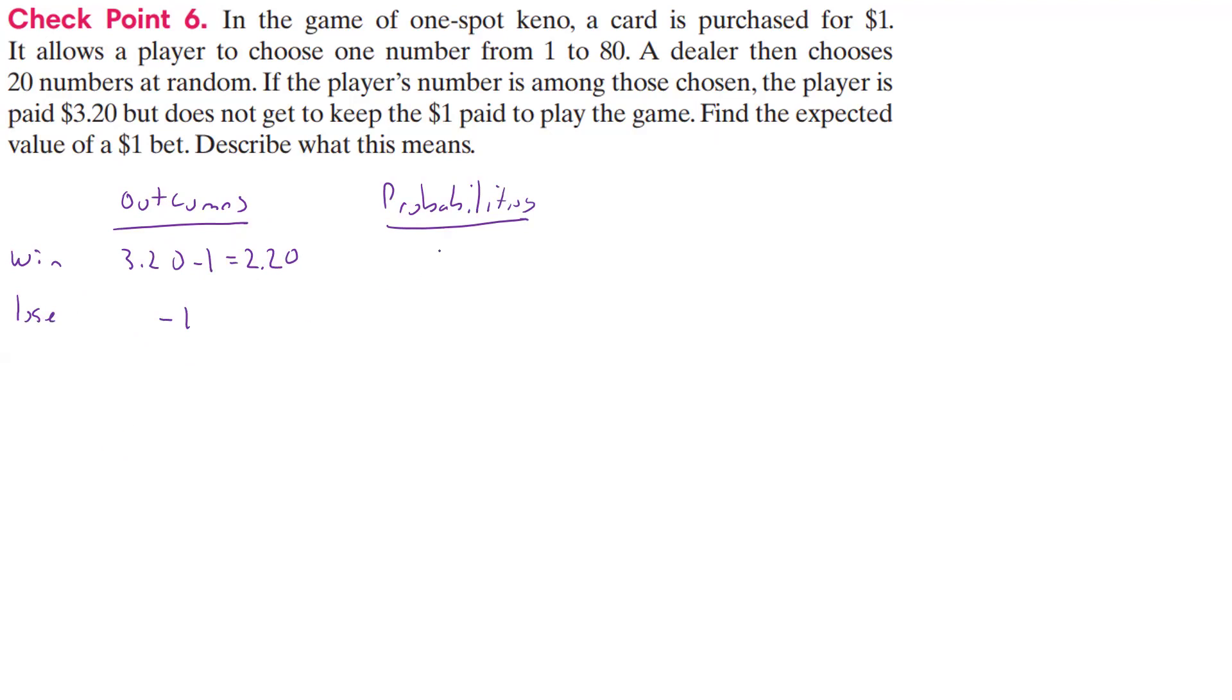Now, what's the probability? Well, if we win, we're going to have basically 20 numbers out of 80 are winners, so that probability is 20 out of 80 could be a winner. Now, the number of losers, well, guess what? There's 60 out of 80 that are going to lose, so it looks like there's a bigger probability of losing than there is winning.